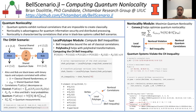Bell inequalities are important because they can test whether or not correlations are nonlocal. In the code example, we use the local polytope module to enumerate the vertices of the local polytope and then use polyhedra.jl to transform the set of vertices into a set of facets. We take the 15th inequality of the set of facets because it is formally known as a CH inequality and has a known quantum violation.